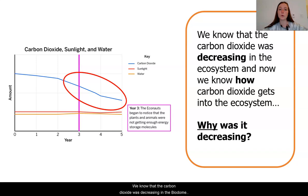So we know that the carbon dioxide was decreasing in the biodome. We know how carbon dioxide forms in an ecosystem, and so hopefully we will be able to use our understanding of how this carbon dioxide gets into the ecosystem to understand why it might be decreasing.